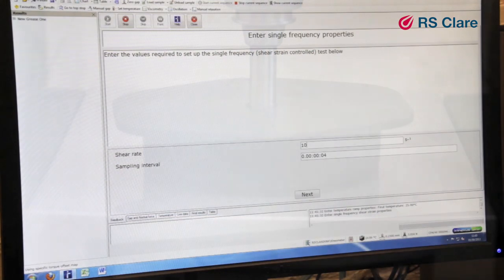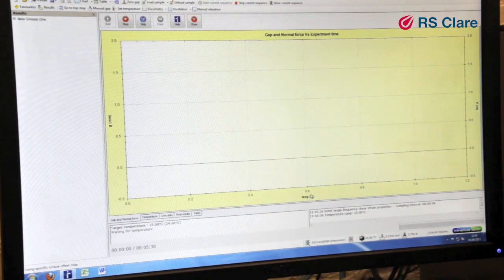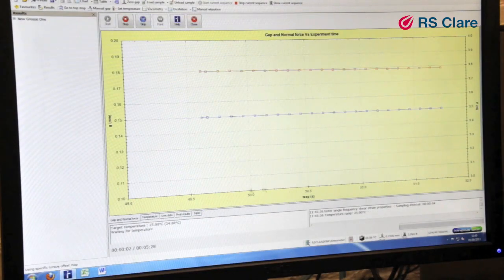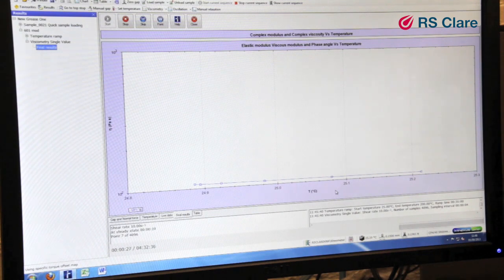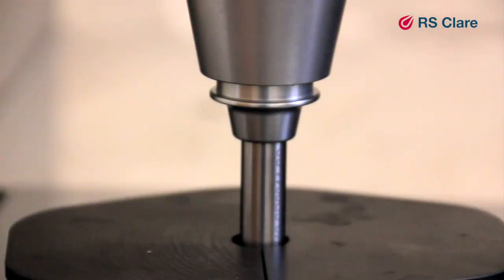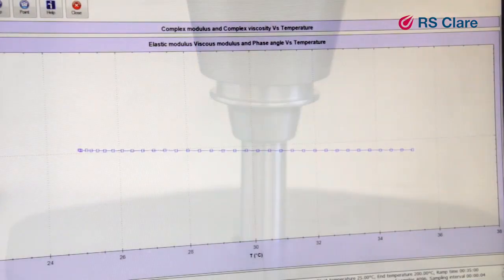The cone can either be rotated or set to oscillate at a known speed. The test parameters are inputted into the computer. The nature of the test allows different aspects of the grease's properties to be studied.